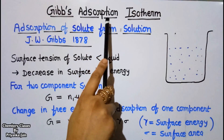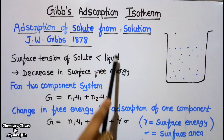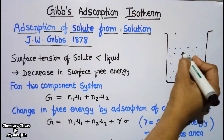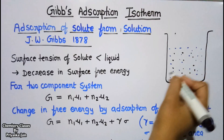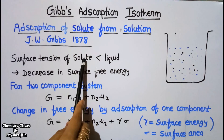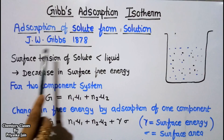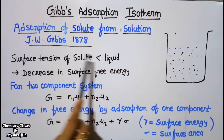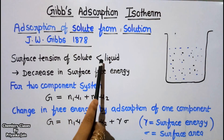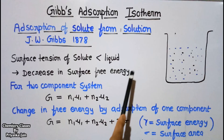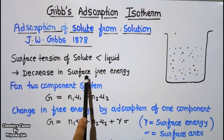Since this is an isotherm, the whole process takes place at constant temperature. We consider a beaker containing a liquid — a two-component system where a solute is dissolved in the liquid. Component one is the liquid and component two is the solute. The surface tension of the solute is smaller compared to that of the liquid, so the solute will decrease the surface free energy of the liquid.